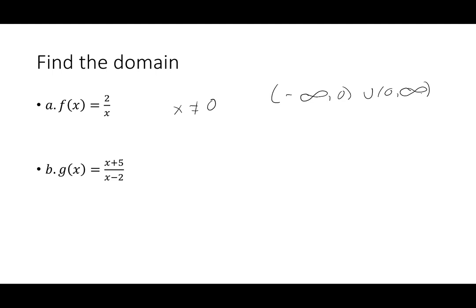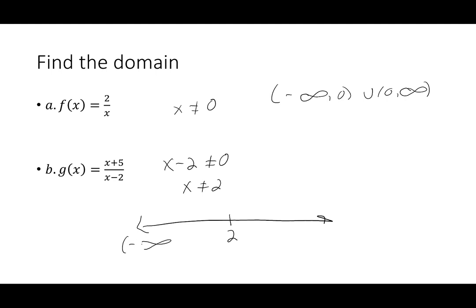Same thing with g(x) = (x+5)/(x-2). I look at the bottom, x minus two can't be zero, which means x can't be two. If you need help with interval notation, draw a quick number line, put two on it. I have all numbers to the left — negative infinity until two — then from two to infinity. So the domain is negative infinity to two, union two to infinity.